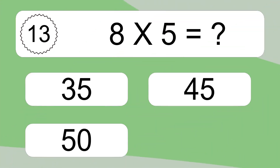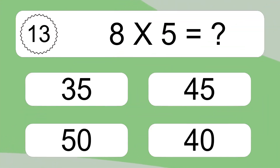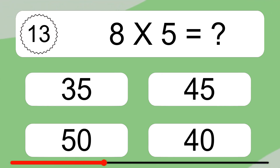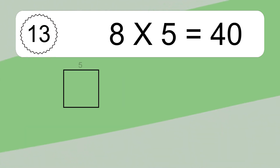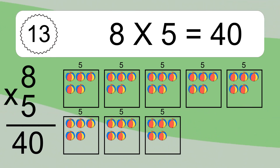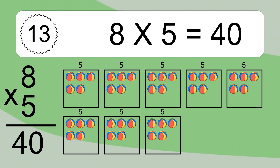8 times 5 equals what? We have 8 boxes, and each box has 5 colorful balls inside. 8 times 5 equals 40.